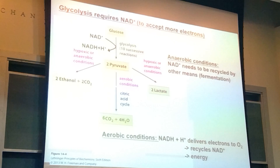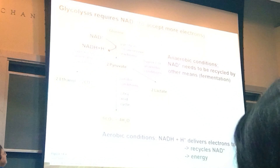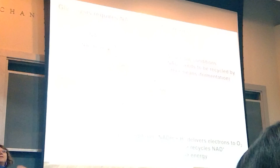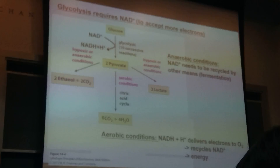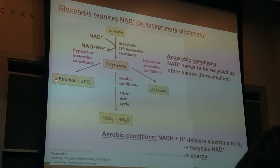We have talked about glucose going to pyruvate in glycolysis, which was 10 reactions that you will know. Then we have pyruvate, and it can go through the citric acid cycle — which we're going to talk about more in coming lectures — all the way to CO2 and water under aerobic conditions. But under hypoxic, which is low oxygen, or anaerobic — no oxygen — you can actually have fermentation where you're getting ethanol, and you can also have conditions where you're going to get lactate.